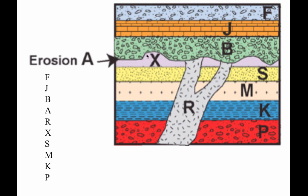R is next after A, and the reason R is next is because this one is a real crosscut — it cuts across X, S, M, K, and P, so it has to be younger than all of those. Otherwise they would have covered it up or something like that. So X, S, M, K, and P are all in order, with X being the youngest out of those and P being the oldest of them. The way I know that is because of the law of superposition.